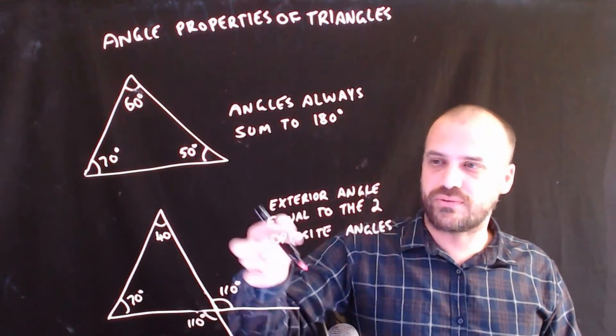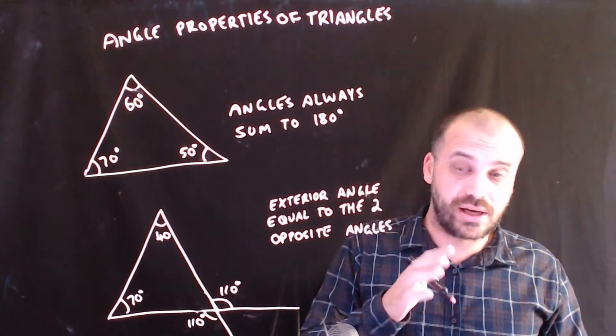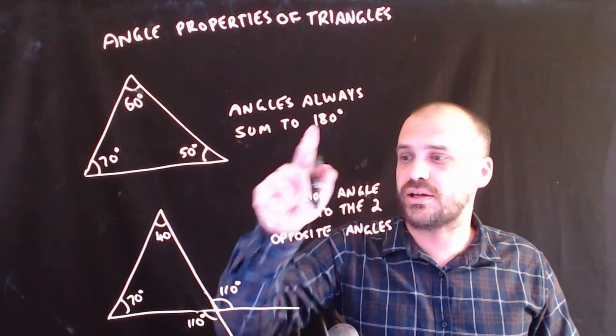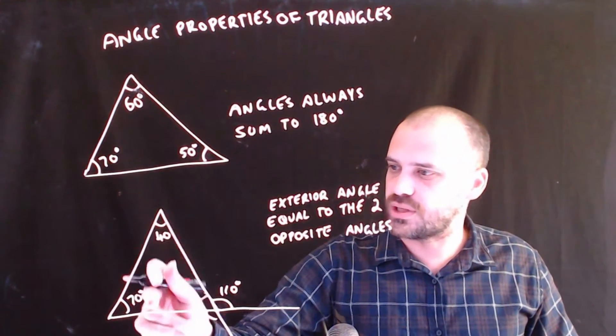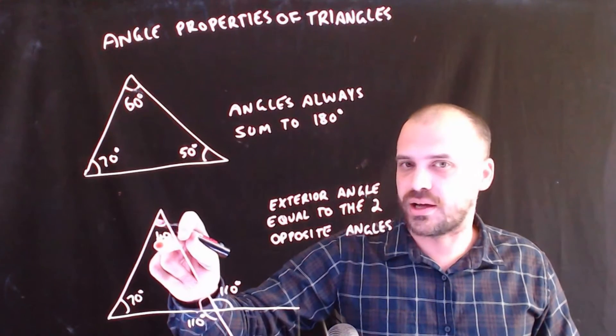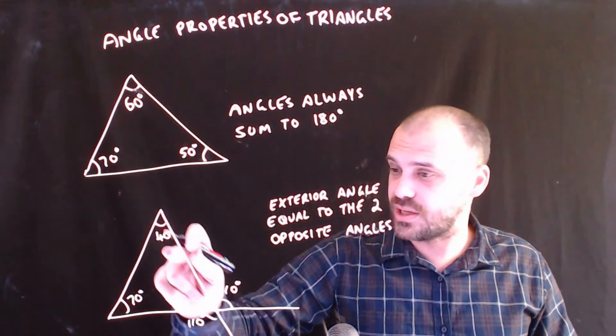Now, if you were to forget this rule, 9 times out of 10, you'll be okay because you'll be able to use the angle sum to find this one. 70 plus 40 is 110. 180 minus 110 is 70. So, you'll figure out that that is 70 degrees.